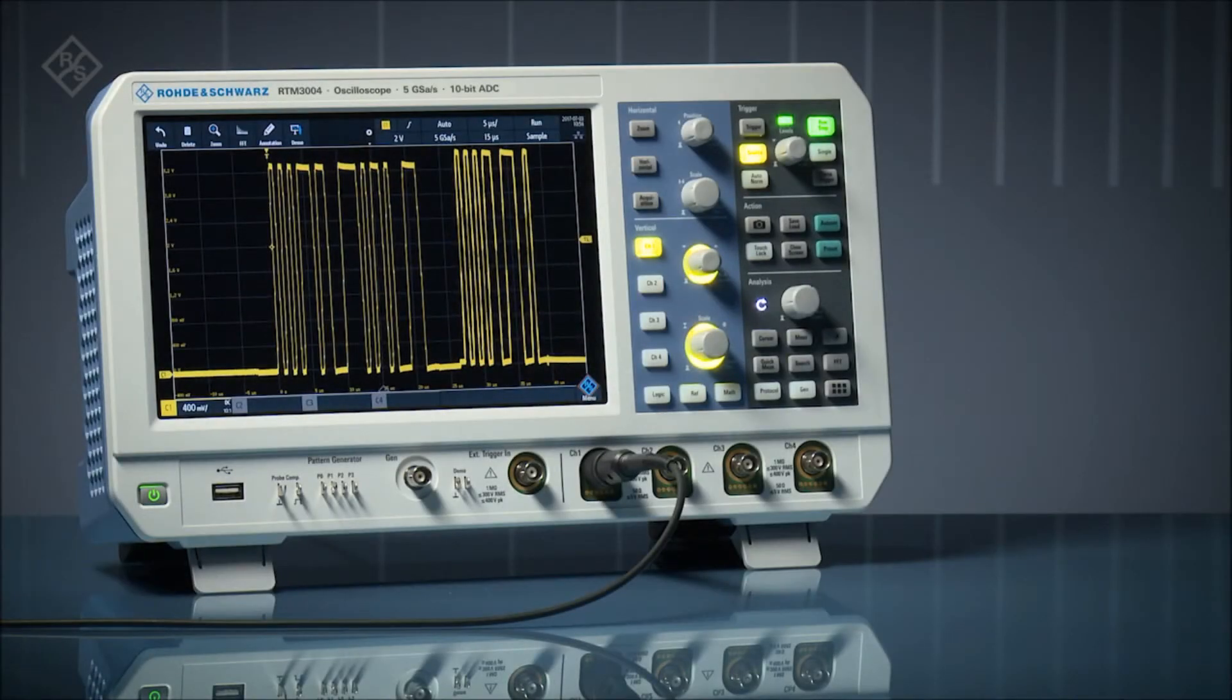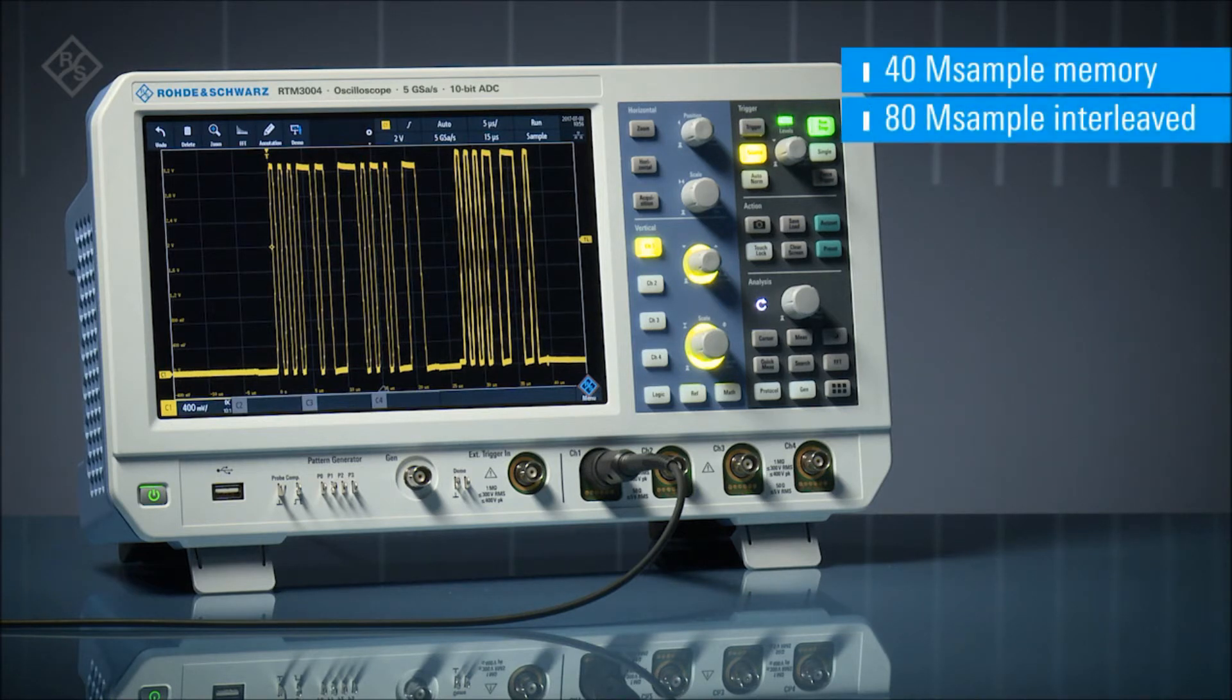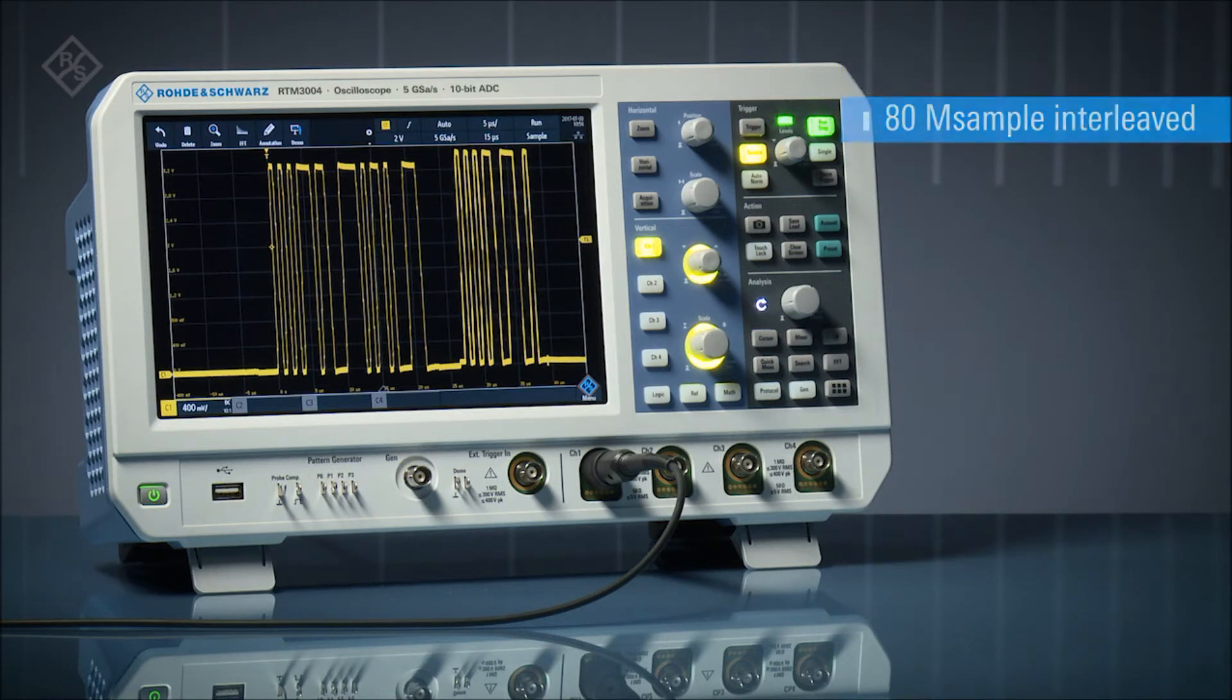Rohde & Schwarz RTM 3000 series oscilloscopes feature a standard acquisition memory of 80 megasample. Why is deep memory important? For short times, even scopes with small memory depths retain sufficient sample rate and show important signal detail.